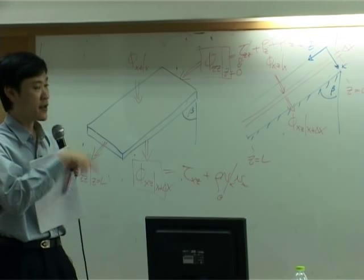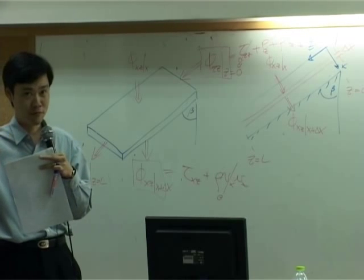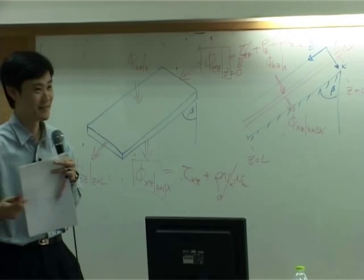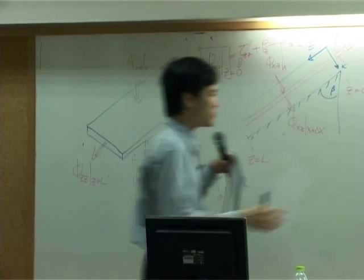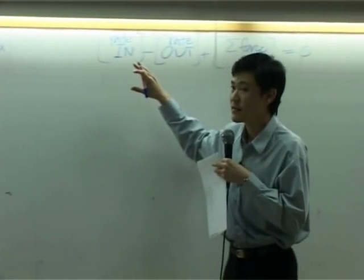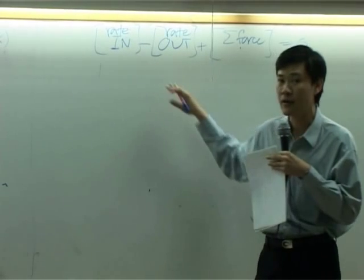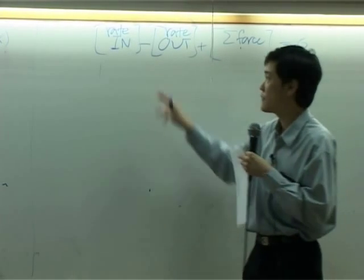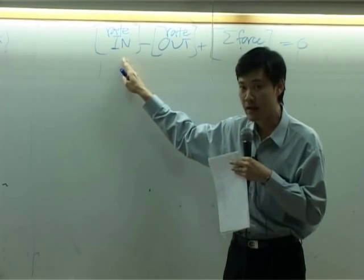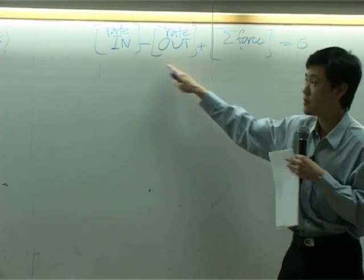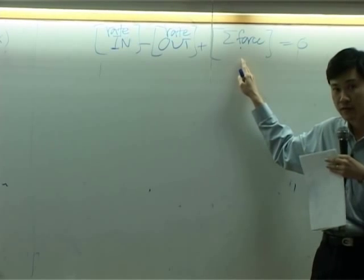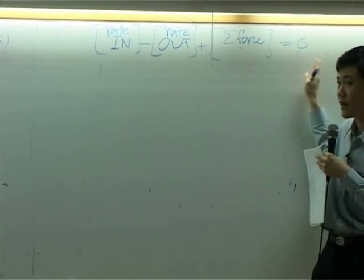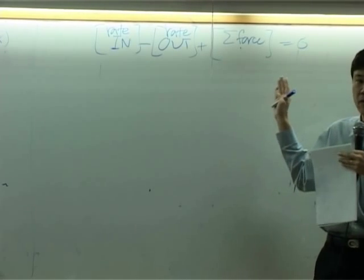Last class we stopped there. Did you recall anything? So for today we try to finish the example. Once you determine the flux in each direction, then we can set up the equation for the microscopic balance. The equation itself is: the rate of momentum in minus rate of momentum out plus rate of generation (and rate of generation of momentum is basically summation of the force acting upon the shell) equals accumulation. For steady state, accumulation will be zero.